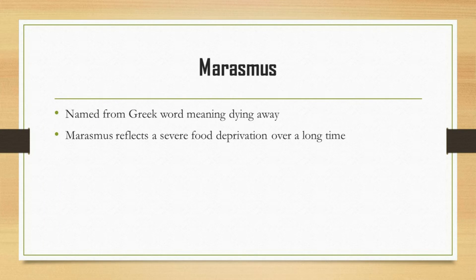Marasmus is a severe form of malnutrition, specifically protein energy undernutrition, resulting from an overall lack of calories. It is a deficiency of all macronutrients: carbohydrates, fats, and proteins. If you have marasmus, you lack the fuel necessary to maintain normal body functions. People with marasmus are visibly depleted, severely underweight, and emaciated. Children may be stunted in size and development, and prolonged marasmus leads to starvation.